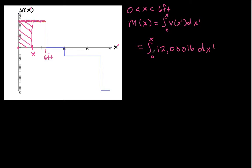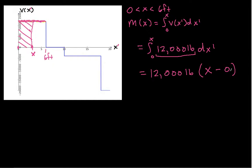So I can write M(x) as the integral of 12,000 pounds dx'. This is a constant, so I can take it outside the integral and have 12,000 pounds times the integral from 0 to x of dx'. When I work that out, I get 12,000 pounds times (x minus 0), and the minus 0 goes away. So for x between 0 and 6 feet, M(x) is 12,000 pounds times x.